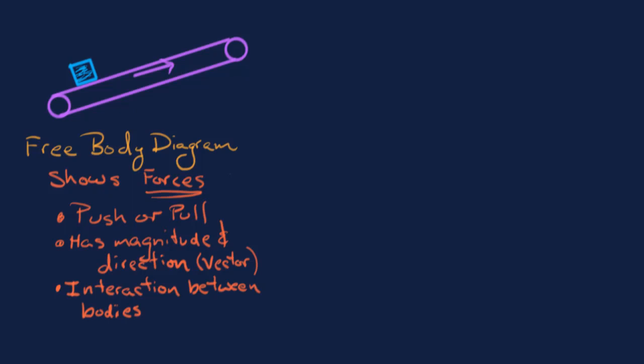Whenever we draw a free body diagram, we should ask ourselves: a free body diagram of what? In this case the answer is fairly simple, but often it's a point of confusion. In our case, we're drawing the free body diagram of the block of ice, and we want to depict the forces acting on that block.